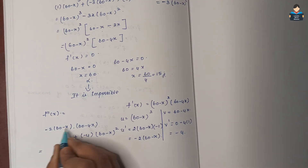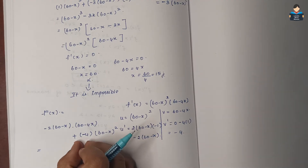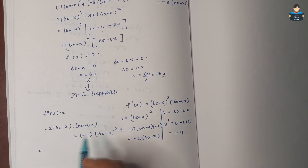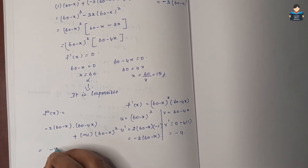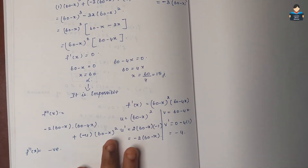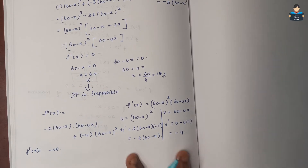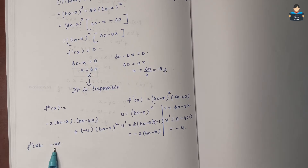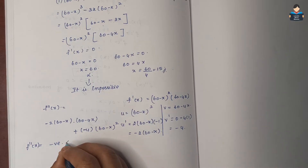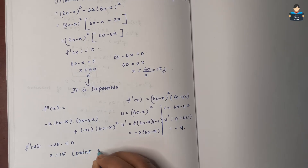Evaluating f''(x) at x = 15: both terms involve minus 2 and minus 4, giving a negative value. Since f''(15) < 0, x = 15 is a point of maxima.